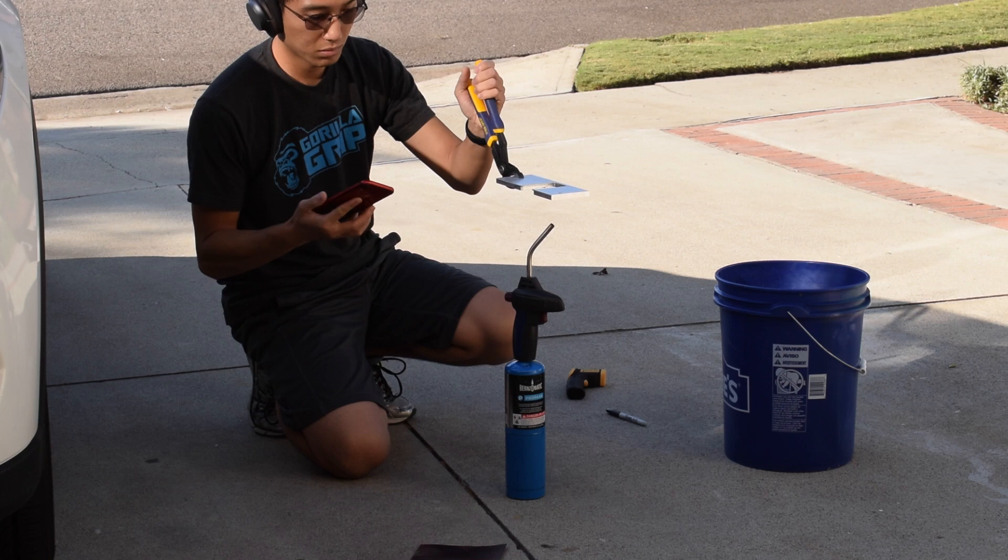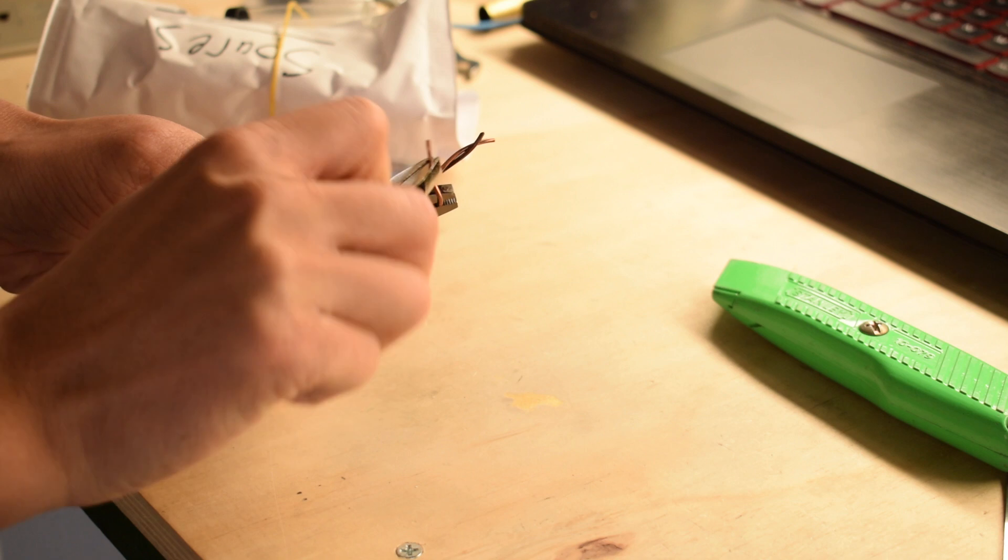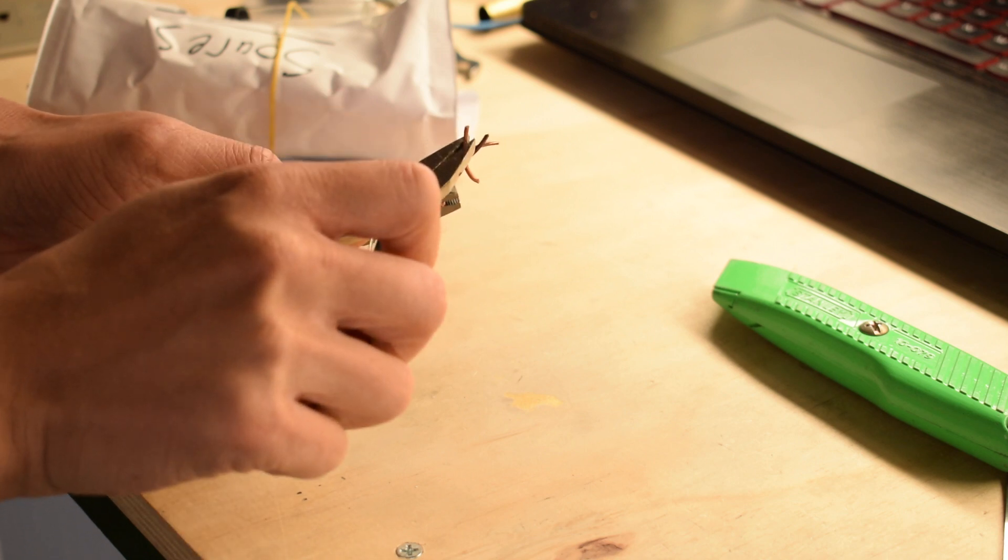As you hammer or bend metals, they'll stiffen up and start cracking. Sort of like what happens when you bend a paperclip back and forth a couple times. Annealing resets this effect.